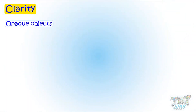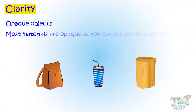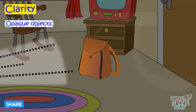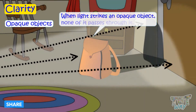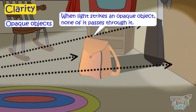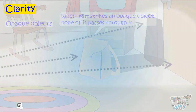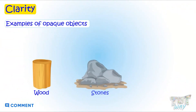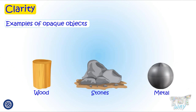Next are opaque objects. Most materials are opaque — you cannot see through them at all. When light strikes an opaque object, none of it passes through them. Materials such as wood, stone, and metals are opaque.